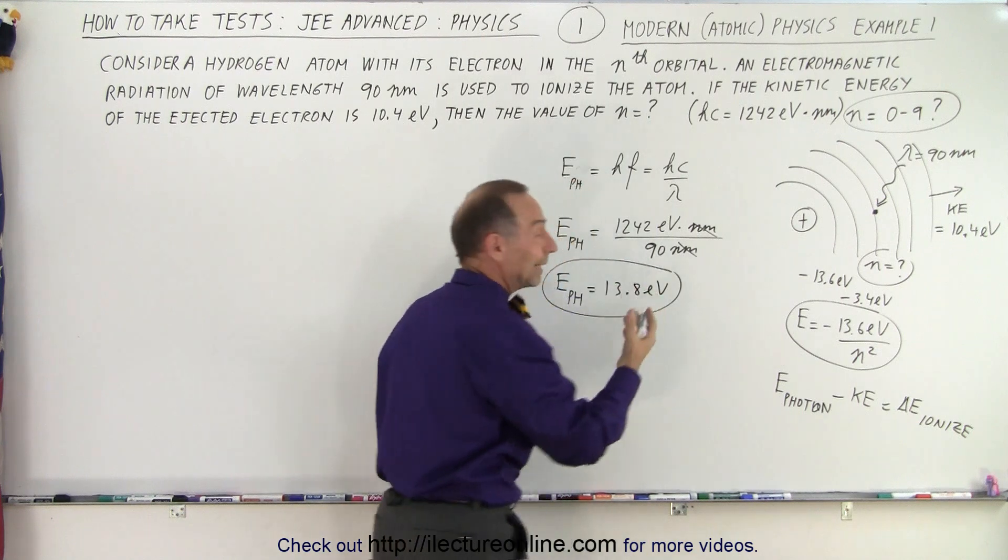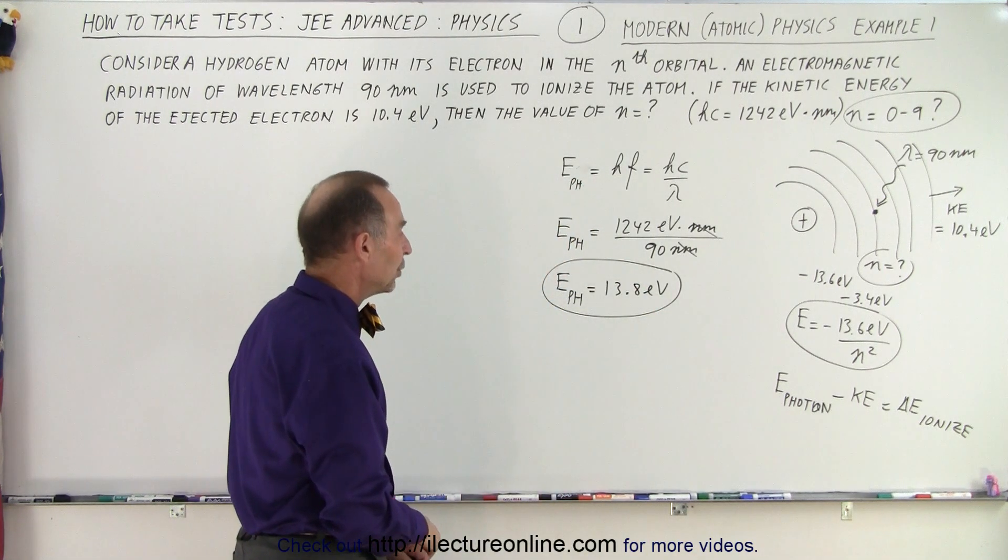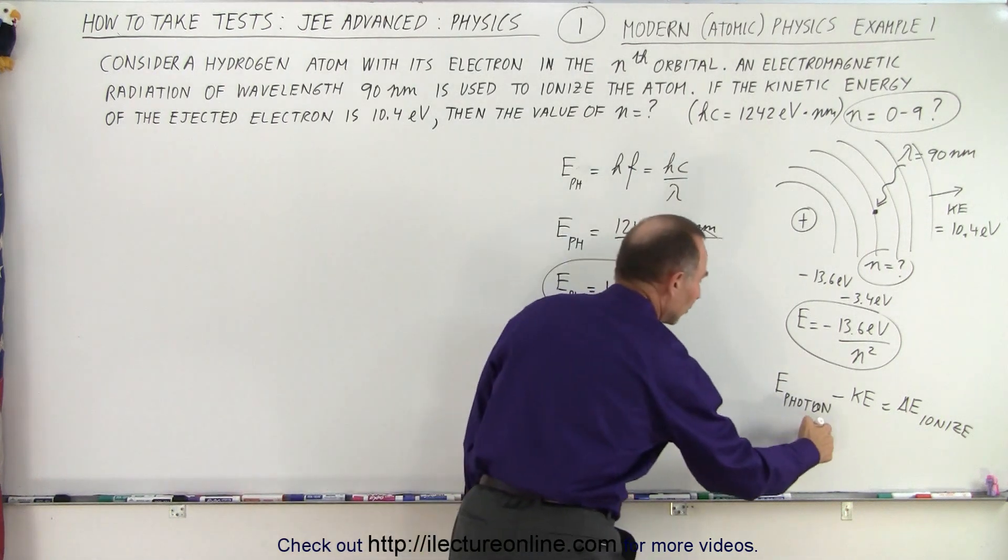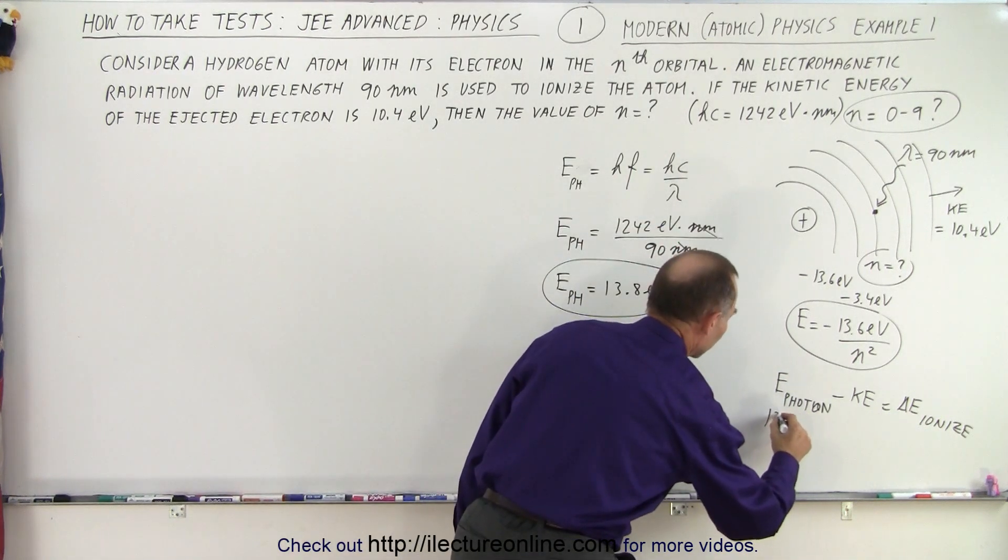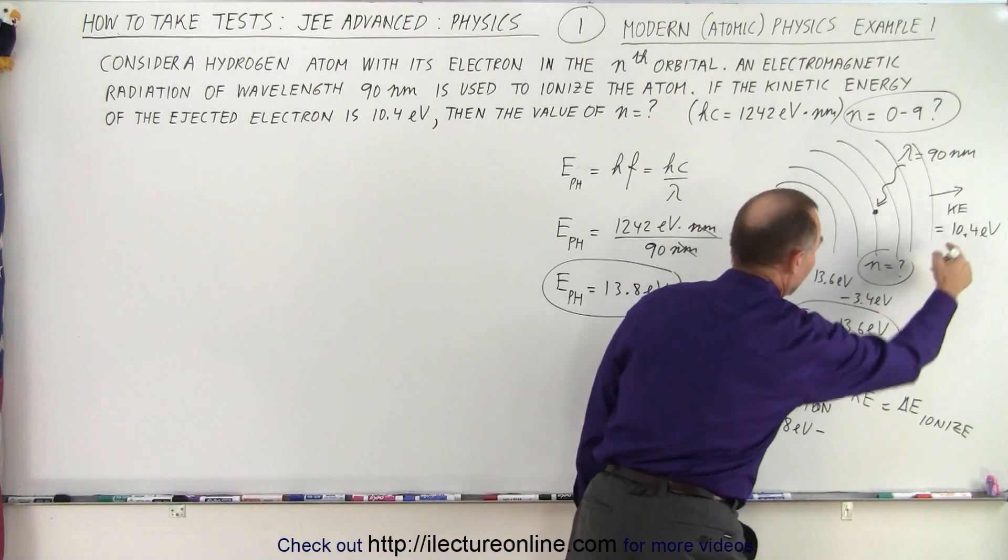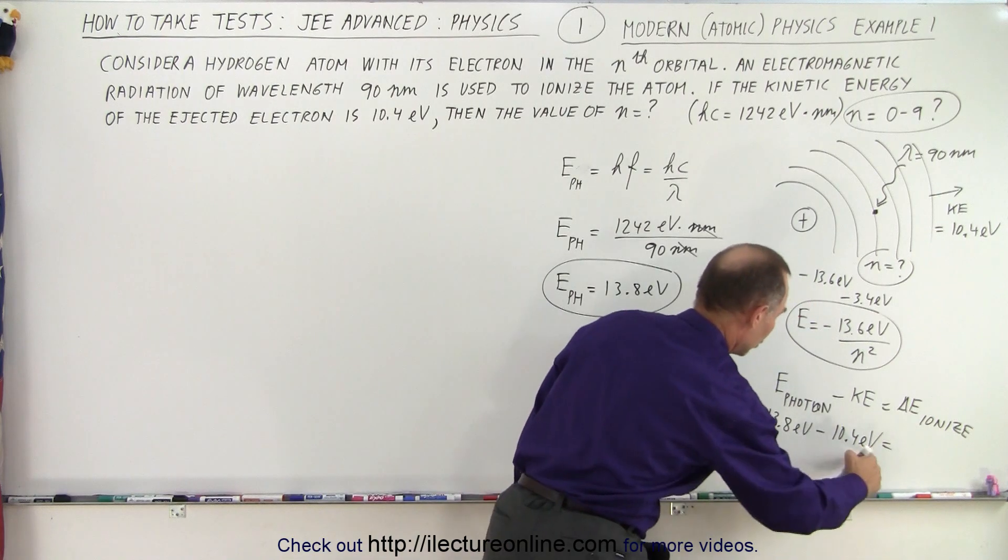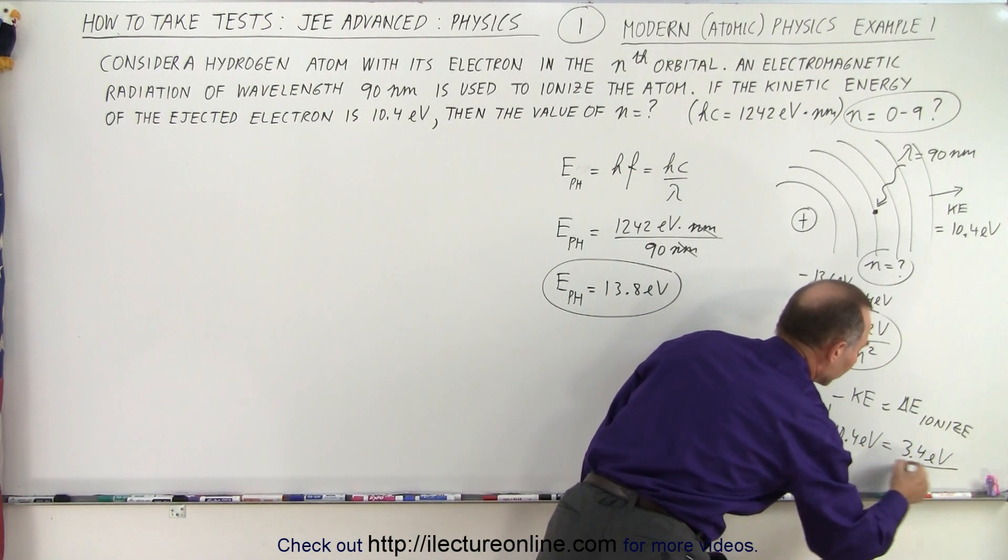So you should be able to do that in your head, or you should be able to quickly work it out on the side. So now that we know the energy of the photon, we can use this equation. We can say that 13.8 electron volts minus the kinetic energy, which is 10.4 electron volts, is equal to 3.4 electron volts.